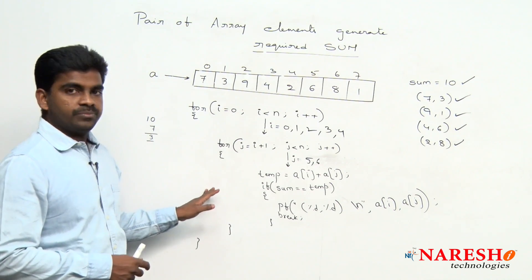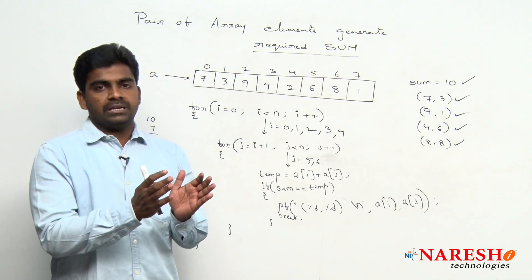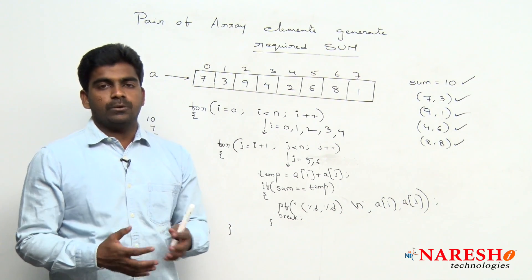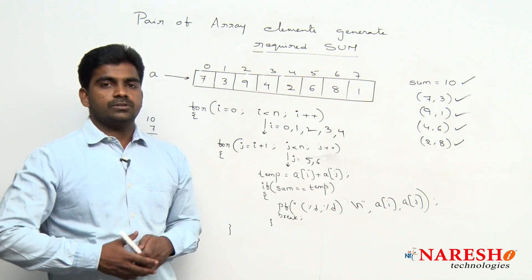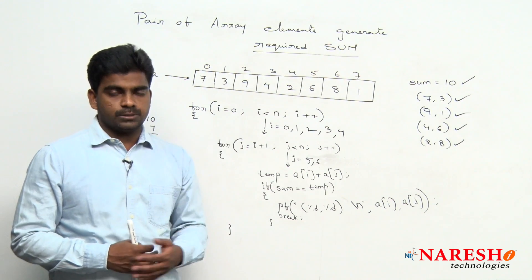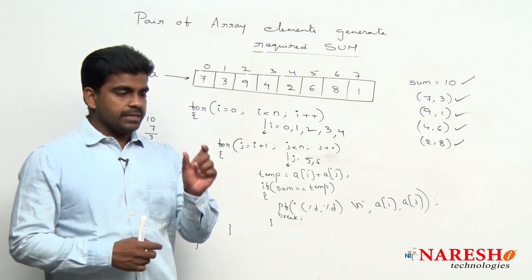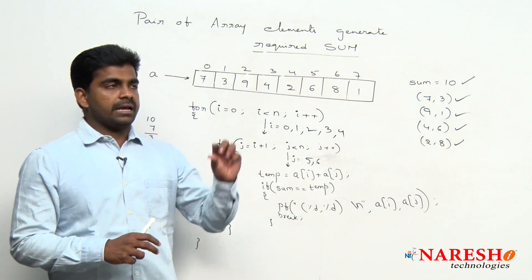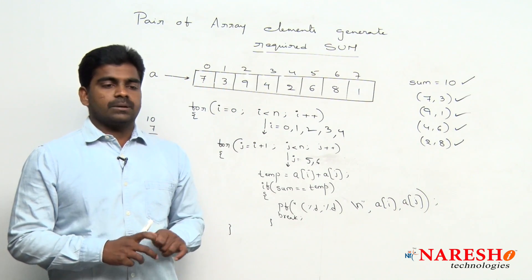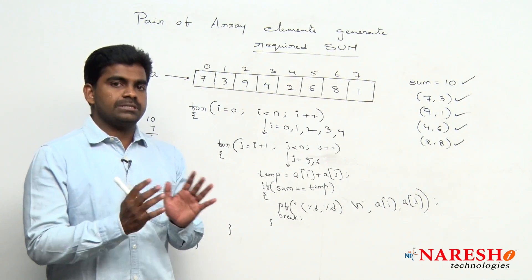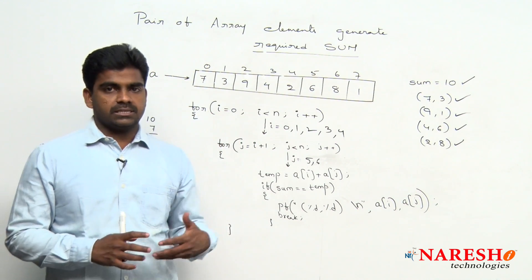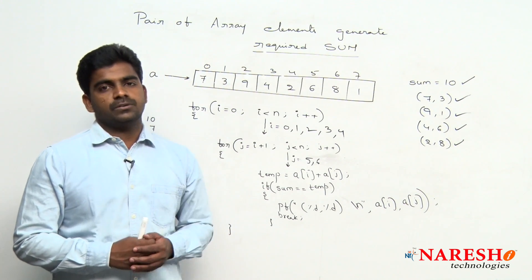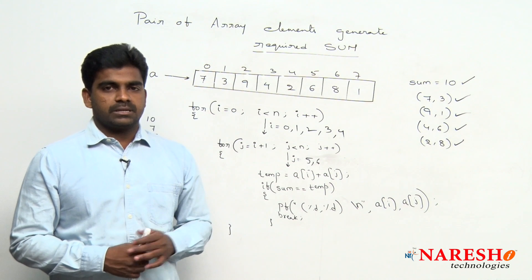This is the code for how to find pairs of elements in an array that generate the required sum — you just have to enter the required sum. Hope you understood. Such problems I will explain in coming videos as well. Here we took only pairs; if you need n number of elements generating the required sum, we will see that in coming concepts. For more videos, please subscribe to the Naresha Technologies channel. Thank you.